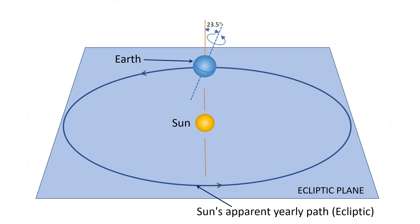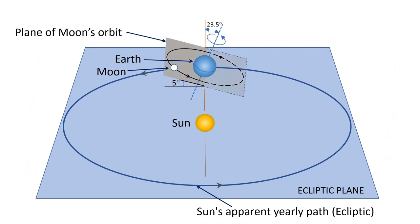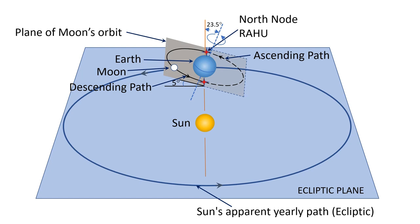We all know that the Moon orbits around the Earth. Moon's orbit has an angle of about 5 degrees to the ecliptic plane. If you draw an imaginary plane containing Moon's orbit around the Earth, as shown with the tilted rectangle, then this will also be at an angle of about 5 degrees to the ecliptic plane. Moon's orbit crosses the ecliptic plane at two locations: the first one is when the Moon is on the ascending path, and the second one is when the Moon is on the descending path. The intersection on the ascending path is called North Node and referred to as Rahu in Sanskrit, and the intersection on the descending path is called South Node and referred to as Ketu in Sanskrit.